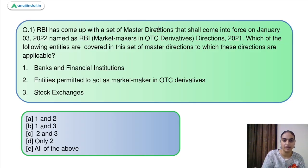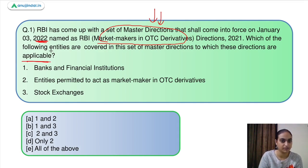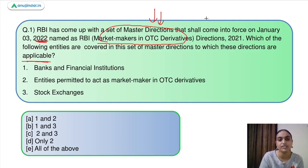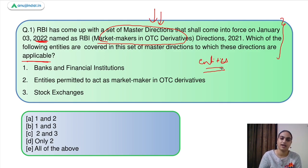Moving on to question number one: RBI has come up with a set of master directions that shall come into force on January 3rd, 2022, named RBI Market Makers in OTC Derivative Directions 2021. Which of the following entities are covered in this set of master directions? These directions will be applicable from 2022 onwards. All questions today are related to this set of master directions only.